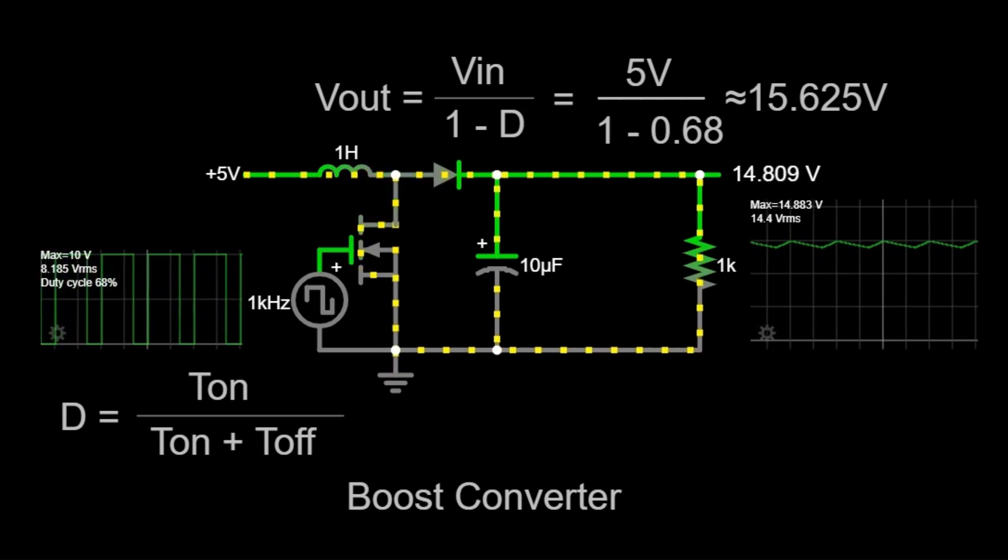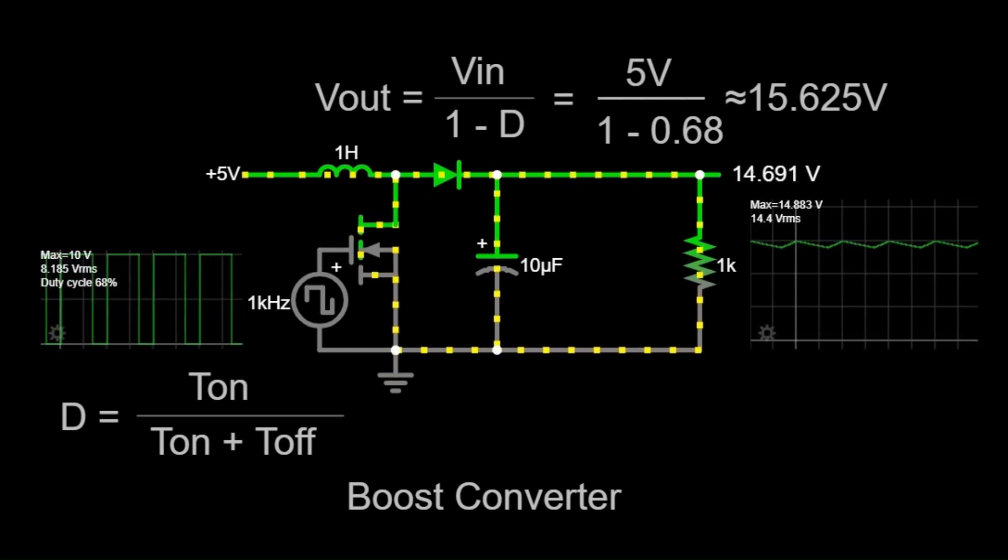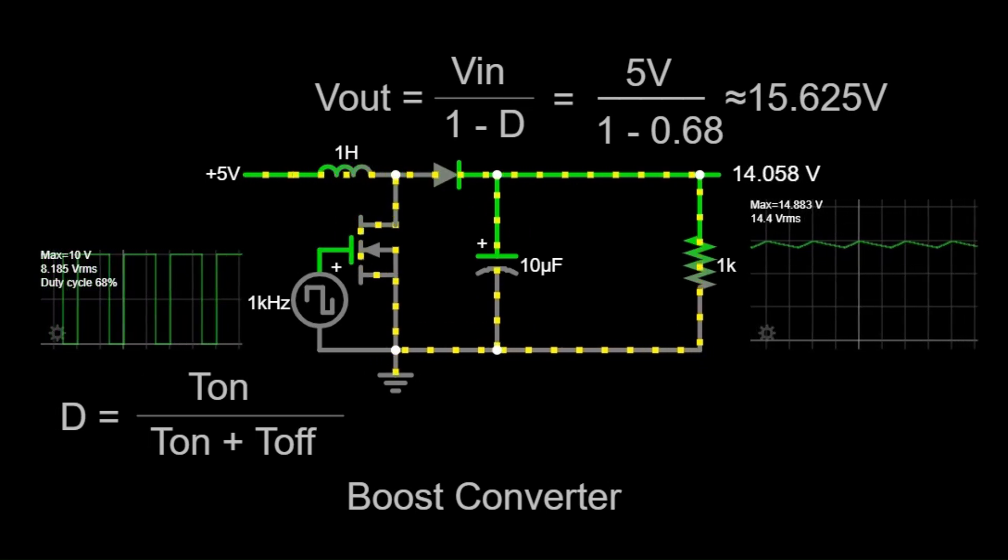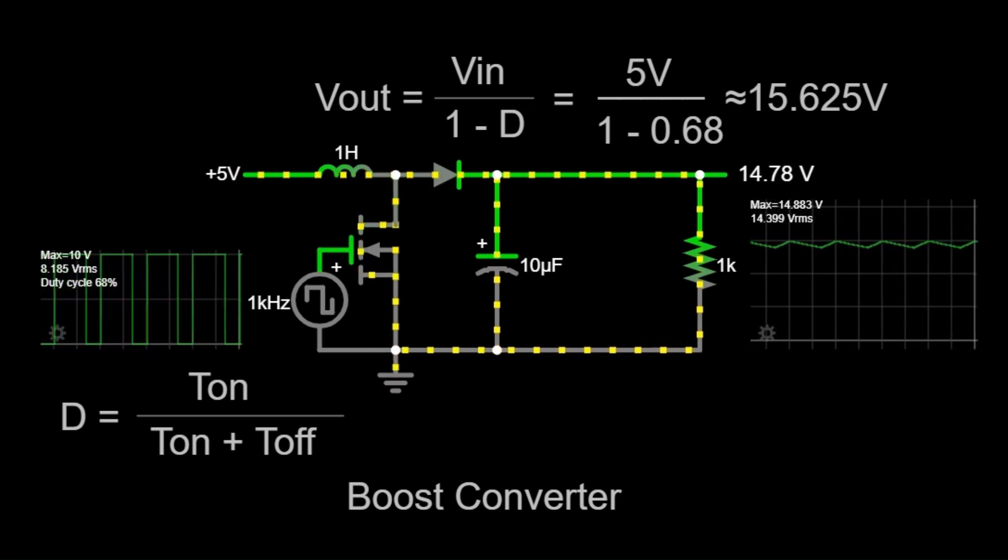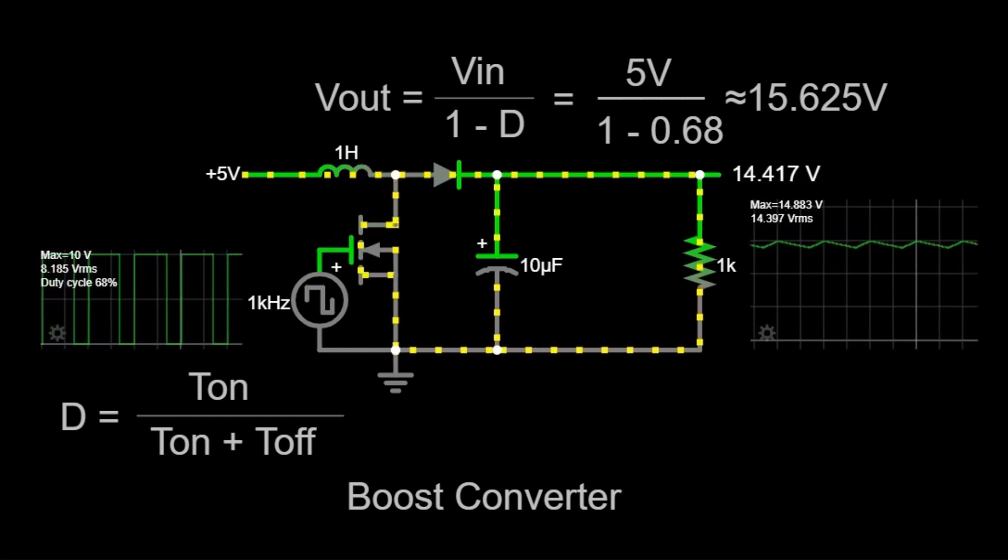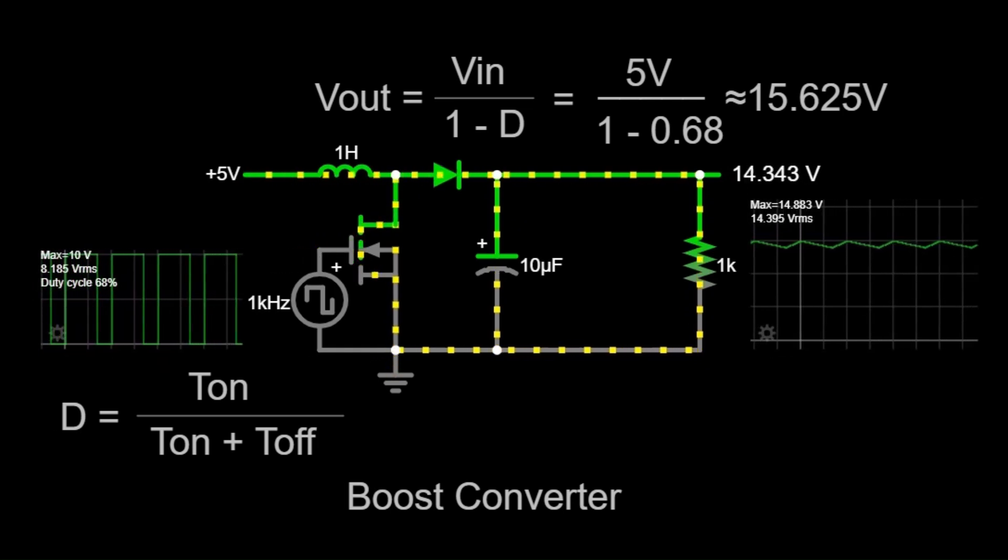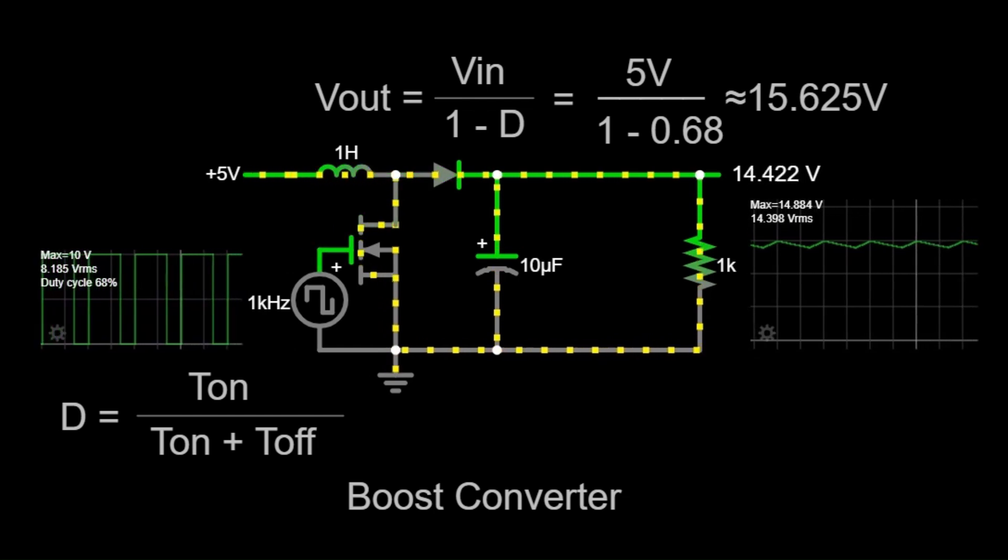Let's start by understanding what a boost converter is. A boost converter is a type of DC-DC converter. DC stands for direct current, which is the type of current where the electric charge flows in one direction. A boost converter steps up or increases the input voltage to a higher output voltage. Essentially, it boosts the voltage while decreasing the current, which is why it's called a boost converter.